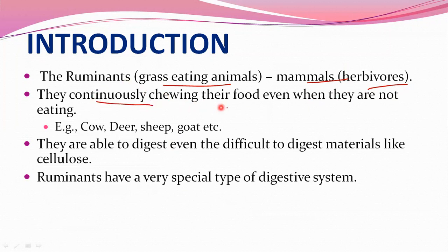They are continuously chewing their food even when they are not eating. Examples include cow, deer, sheep, and goat. They are able to digest even difficult-to-digest materials like cellulose because they contain cellulase enzymes which help in digestion of cellulose. But humans cannot digest cellulose because we lack cellulase enzyme.